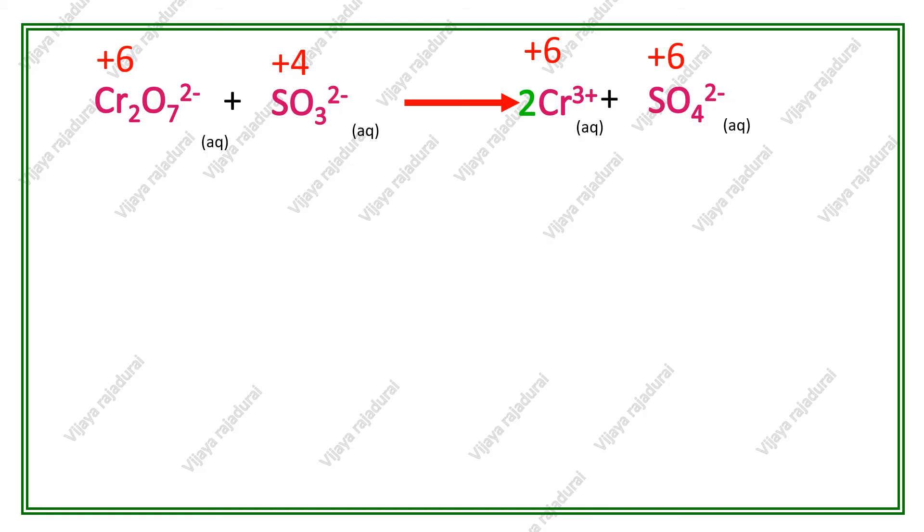Next, dichromate ion changes by the number of electrons. Dichromate to chromium changes 3 electrons.